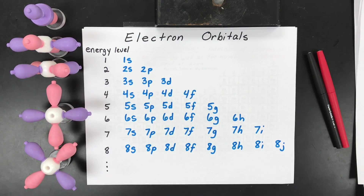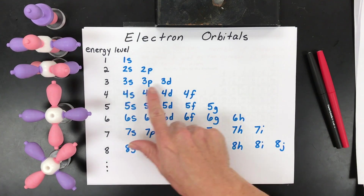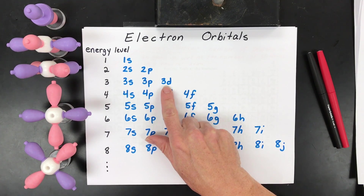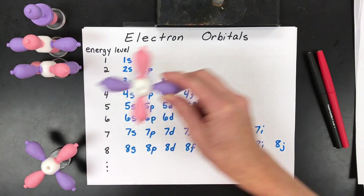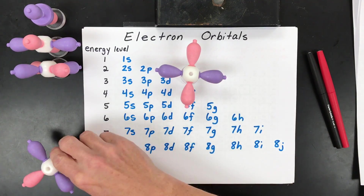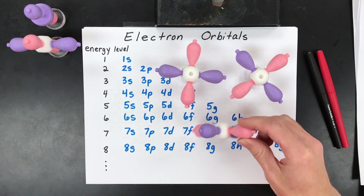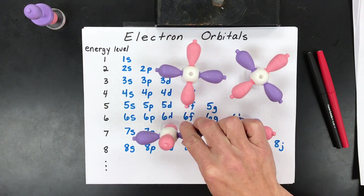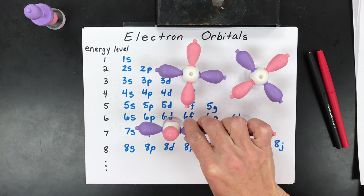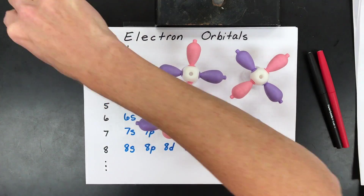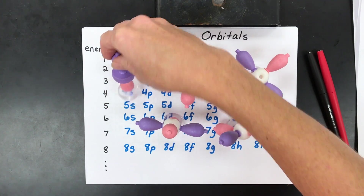This is an electron orbital list. At each energy level you can gain another orbital, and at level three you can have up to three orbitals called d orbitals. D orbitals have four lobes and there are five of them — one facing up and down, one more like a cross or a T, and then a kind of odd-shaped one.